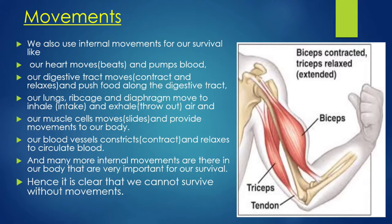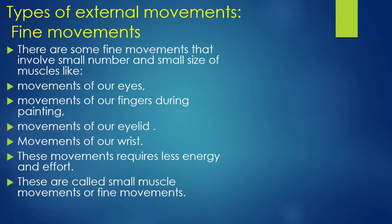If we talk about the types of external movements, fine movements are one category. Fine movements involve a small number and small size of muscles. Examples include movement of our eyes, movement of our fingers during painting, movement of our eyelid, and movement of our wrist.